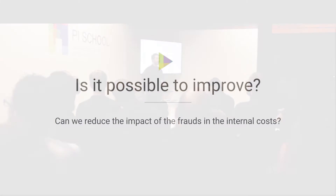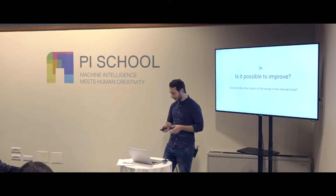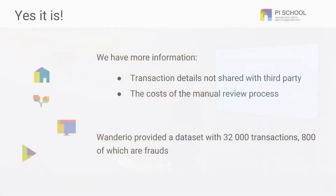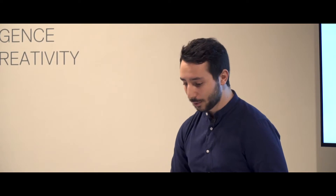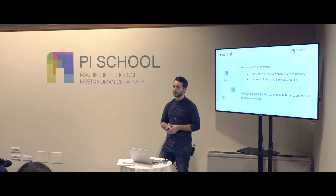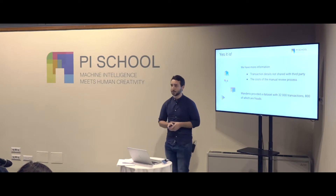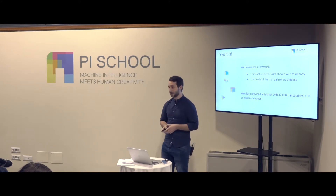So Wanderio asked us if it is possible to do better — if it is possible to reduce the impact of the internal costs of the frauds. The answer is yes, it is possible. It is possible because we can access more information and know all the details of the transactions, even the ones not shared with the third-party service, and we can account for the internal costs of human review. Together with that, Wanderio provided us a dataset with 32,000 transactions, 800 of which are frauds. With this in mind, we decided to tackle the problem with a cost-sensitive approach.